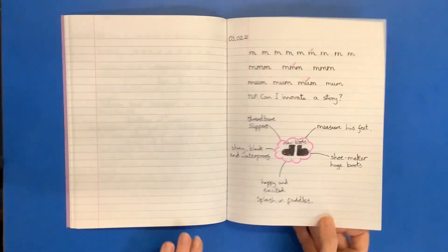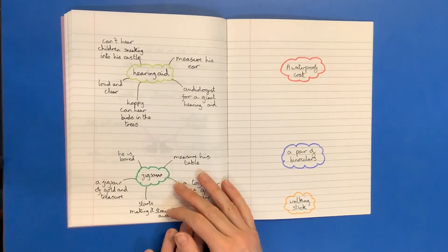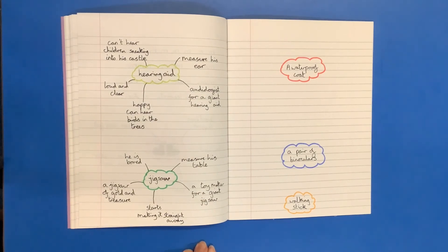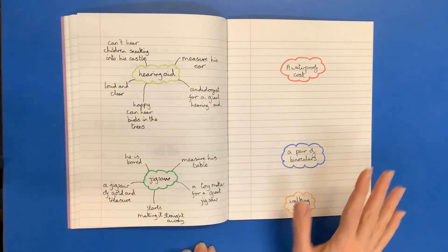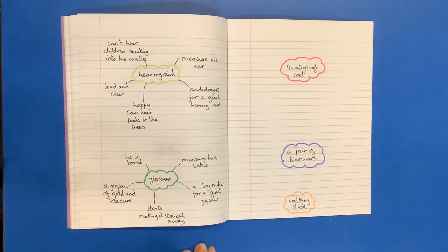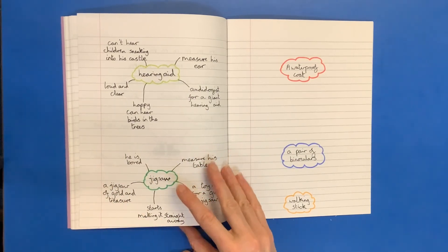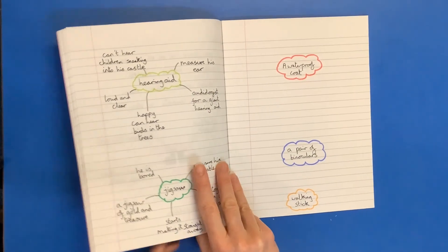Now I don't expect you to do all of these. That would be too much. Maybe if you choose two or three, just two or three, that you think you'd like to write about. Gather your ideas together and then tomorrow we will start writing the story based on your ideas. I look forward to seeing them later on.